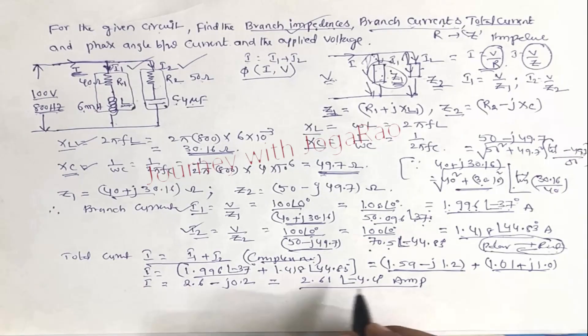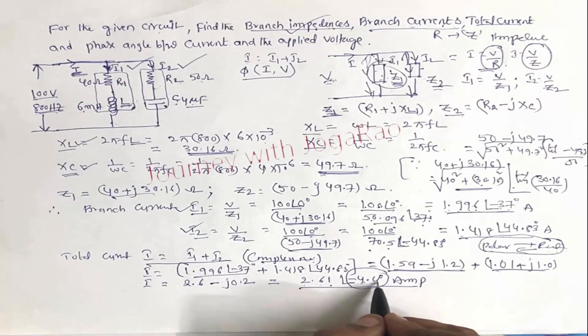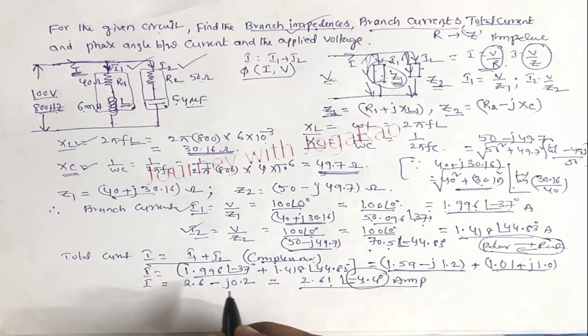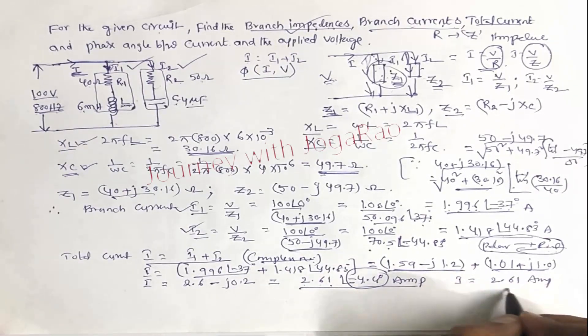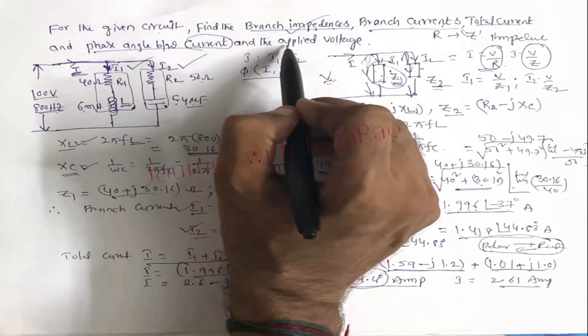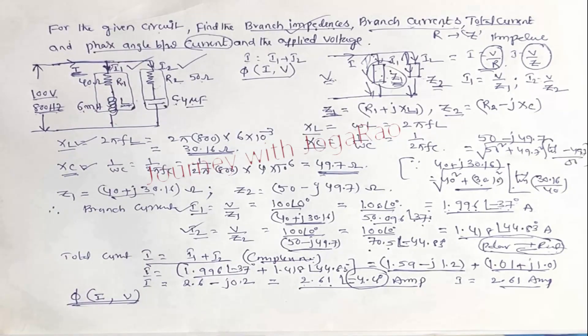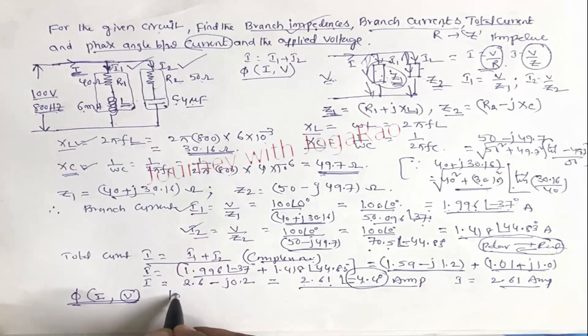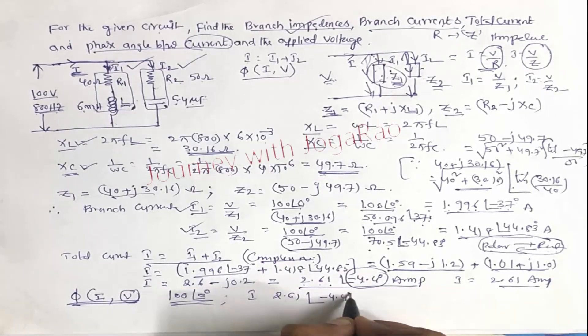So this is total current. Total current is equal 2.61 amperes, angle is minus 4.4 degrees. Next, what is in the question? Phase angle between total current and applied voltage. So total current and applied voltage V, this is the phase angle.